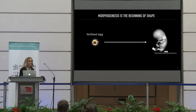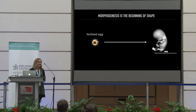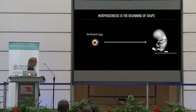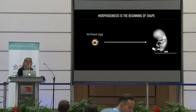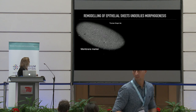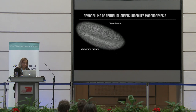When we think about biology, one of the extremely interesting questions is how a very complex organism can be formed from just one cell — the fertilized egg. And in fact, most of the rearrangements that happen...